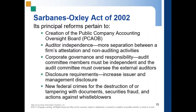The SOX also specifies categories of services that a public accounting firm cannot perform for its audit clients. Corporate governance and responsibility were highlighted — the act requires all audit committee members to be independent and requires the audit committee to hire and oversee the external auditor, separate from the board of directors, to ensure greater checks and balance. Additionally, disclosure requirements were tightened, and new federal crimes were established for destruction of or tampering with documents, securities fraud, and retaliation against whistleblowers.